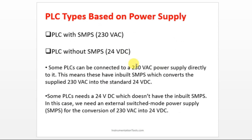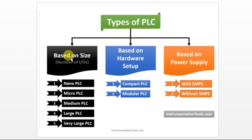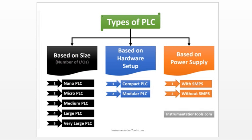The third classification is based on power supply: with SMPS and without SMPS PLC. If you supply 230 volts to the PLC, it is called a with-SMPS PLC. If you supply 24 volts to the PLC, it is called a without-SMPS PLC. When purchasing a PLC for your project, first determine how many IOs you need, what type of hardware setup you want, and what power supply you will provide.